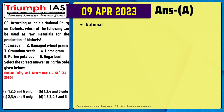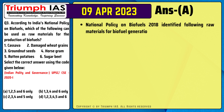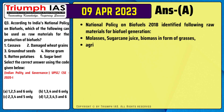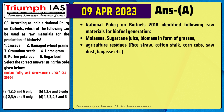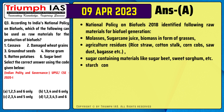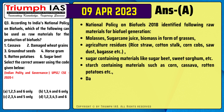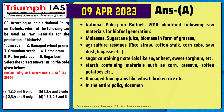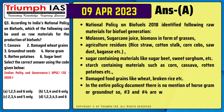The correct answer is option A. National Policy on Biofuels 2018 identified the following raw materials for biofuel generation: molasses, sugarcane juice, biomass in the form of grasses, agriculture residues, rice straw, cotton stock, corn cobs, sawdust, bagasse, sugar-containing materials like sugar beet and sweet sorghum, starch-containing materials such as corn, cassava, rotten potatoes, and damaged food grains like wheat and broken rice. In the entire policy document, there is no mention of horse gram or groundnut, so numbers 3 and 4 are wrong. By elimination, we arrived at answer A.